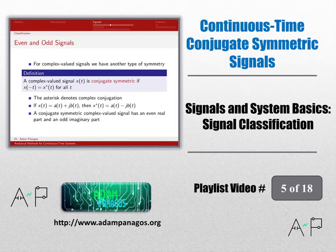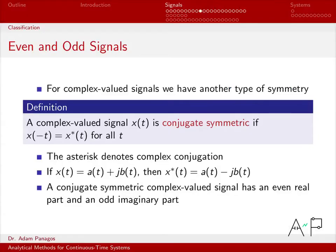The previous video discussed real valued signals and even and odd properties, a type of symmetry that they may or may not have. In this video, we'll talk about complex valued signals and a type of symmetry that they may or may not have. And that type of symmetry is what we call conjugate symmetric.